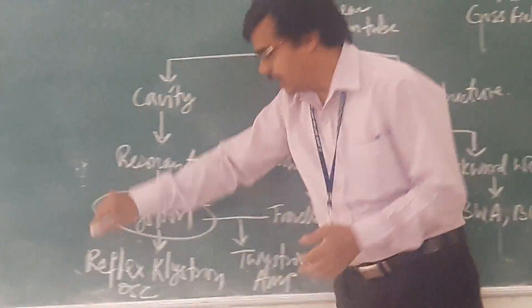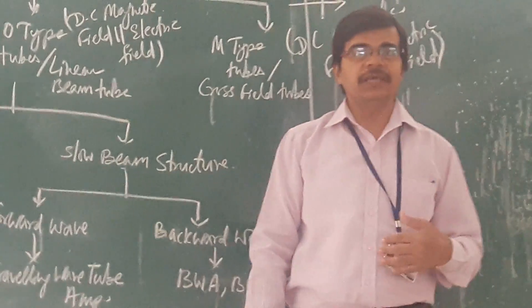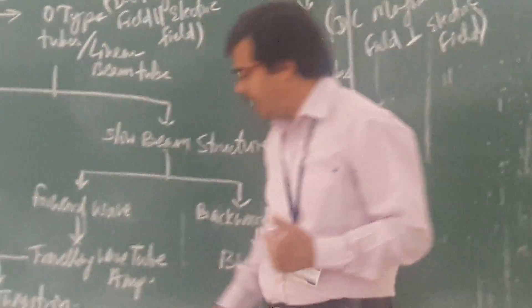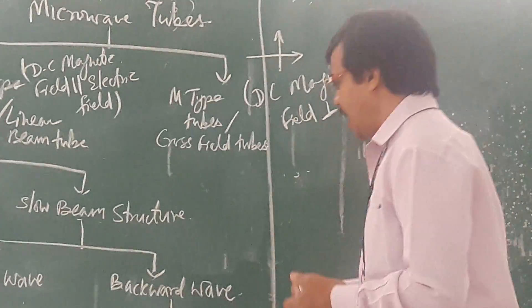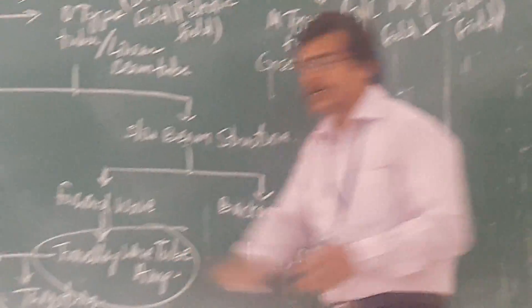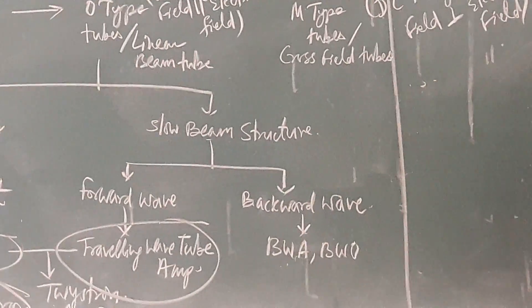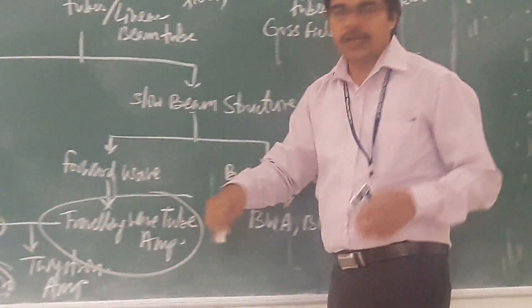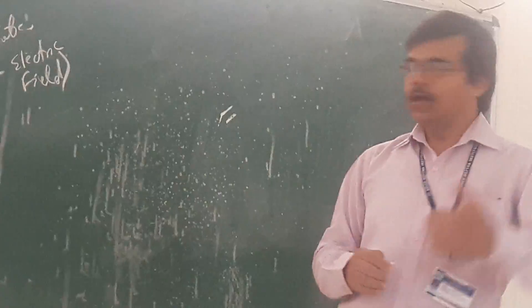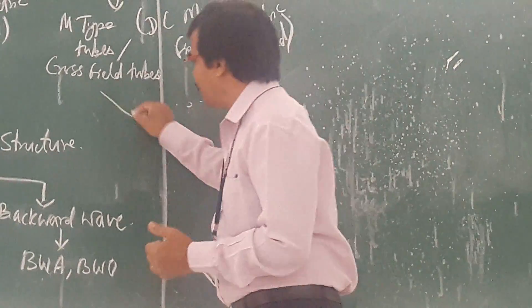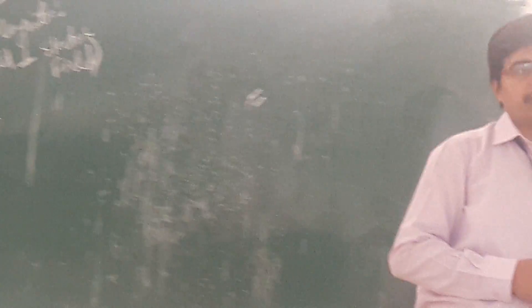Focus on klystron. Klystron means two cavity klystron amplifier. You have to focus on reflex klystron. Reflex klystron is an oscillator. And you have to focus on traveling wave tube. Traveling wave tube is an amplifier. So, these three tubes, these three tubes will be there in your third unit. And when you are going for the fourth unit, there you will have the M type tubes.